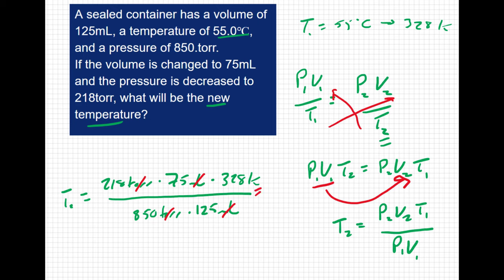So if I plug this in, I get T2 equals 50.5 Kelvin. Now it doesn't specify what units we have, so if you want to leave this in Kelvin, that's fine. Or if you wanted to convert this to degrees Celsius, you would get negative 222.5 degrees Celsius, which is a really cold temperature.